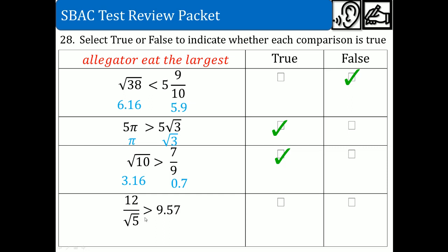Next, 12 divided by the square root of 5: the square root of 5 is close to the square root of 4, which is 2, so 12 divided by 2 is about 6. Is the alligator eating the 6 rather than 9.57? No, so that is false. Remember, you are not given a calculator on this test, so use estimation — find which perfect square the number is closest to. You must memorize your perfect squares.